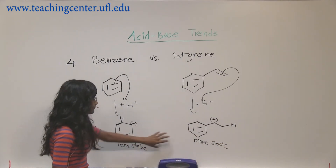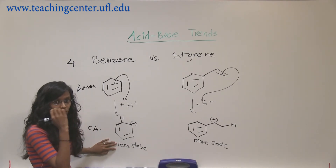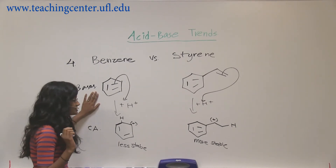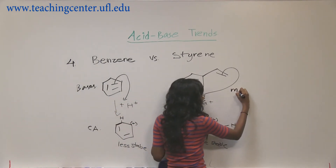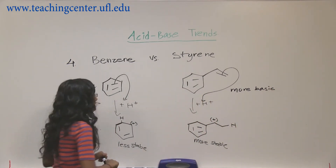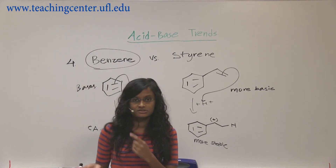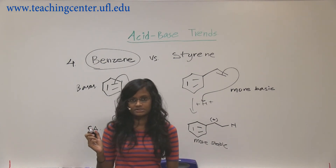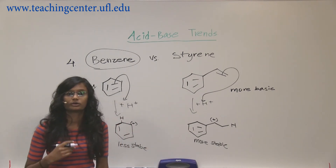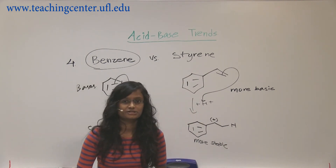So we have a more stable conjugate acid for styrene and a less stable conjugate acid for benzene. Comparing the bases: styrene is more basic. That means benzene has to be more acidic. The question is asking you to circle the structure that's more acidic, so benzene is the answer because styrene is more basic. If the question asks for the more basic structure, then you would circle styrene — so make sure what's being asked, because that's crucial.